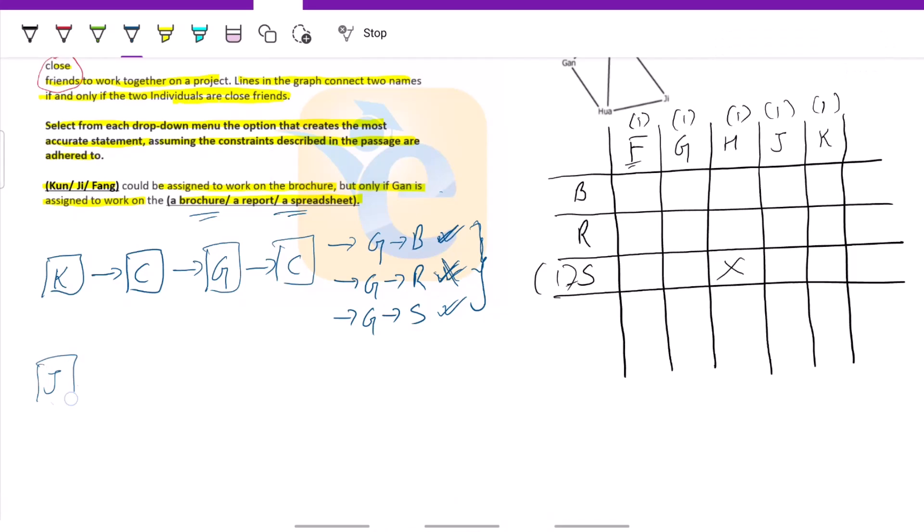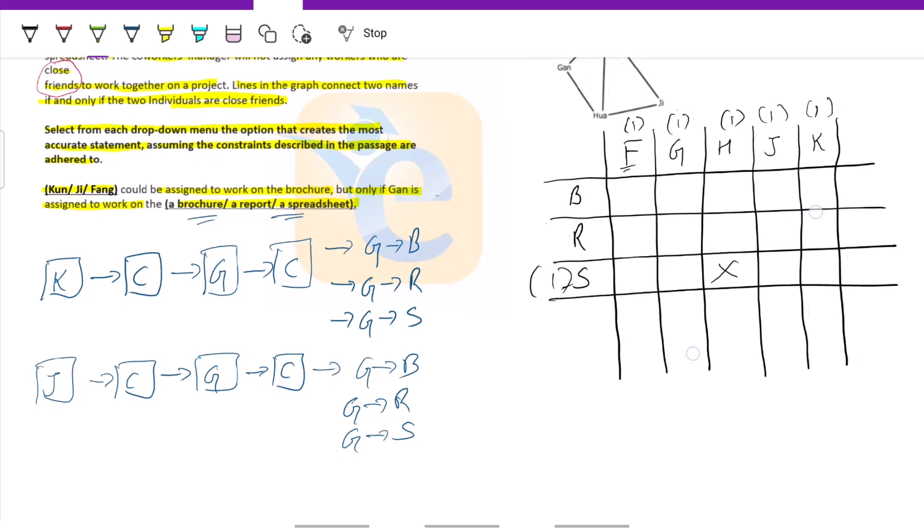Then again, I'll put J at the center, put conditions on him, then put G and the conditions on G. Then we'll see G with respect to brochure, report, and spreadsheet. Again, if we get only one tick and two crosses, then we have our answer or else we do not. We'll move forward. So with this strategy in place, let us try putting in the ticks and crosses.